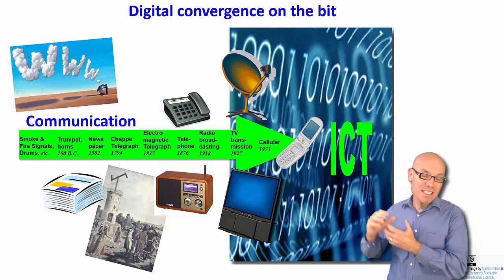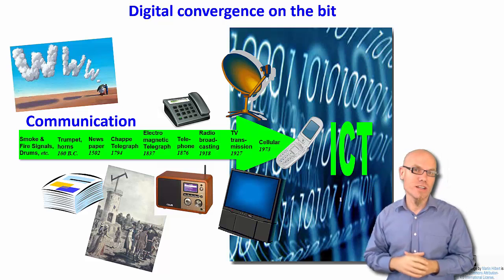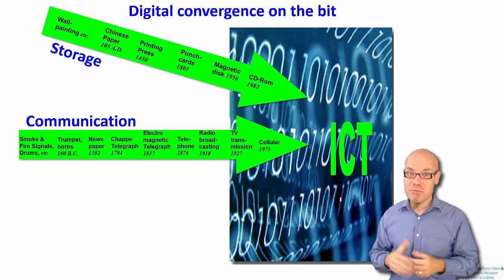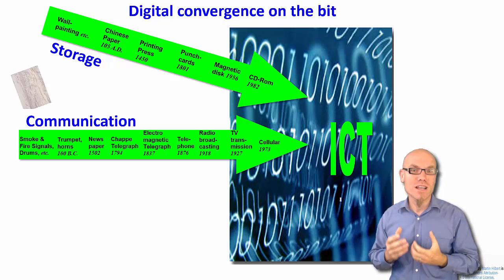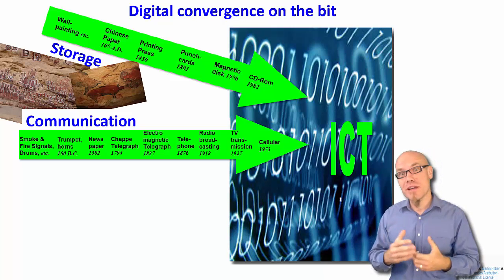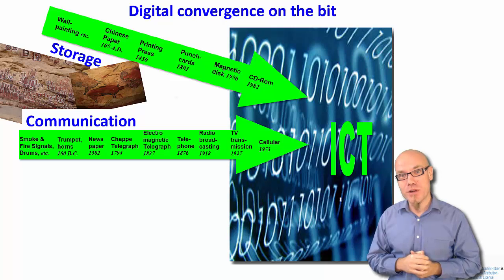A second technological trajectory has to do with storage technologies. That's also a very old technological trajectory. Cave paintings were one of the first information storage devices, if you will.